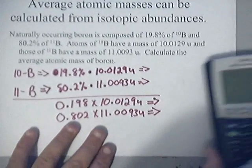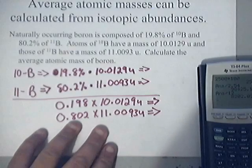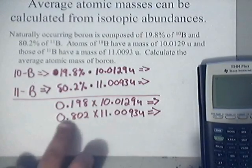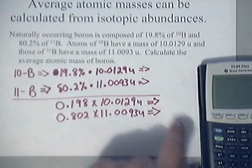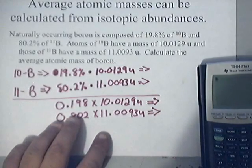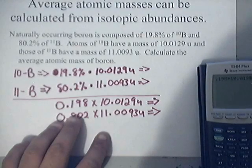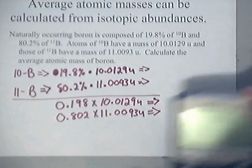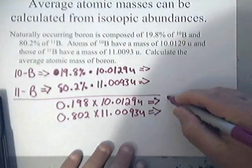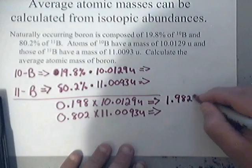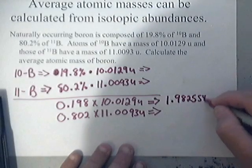Now, what I'm going to do is I'm going to multiply these two together. And these two together, then these two together, you get two unique numbers. So that's 0.198 times 10.0129.